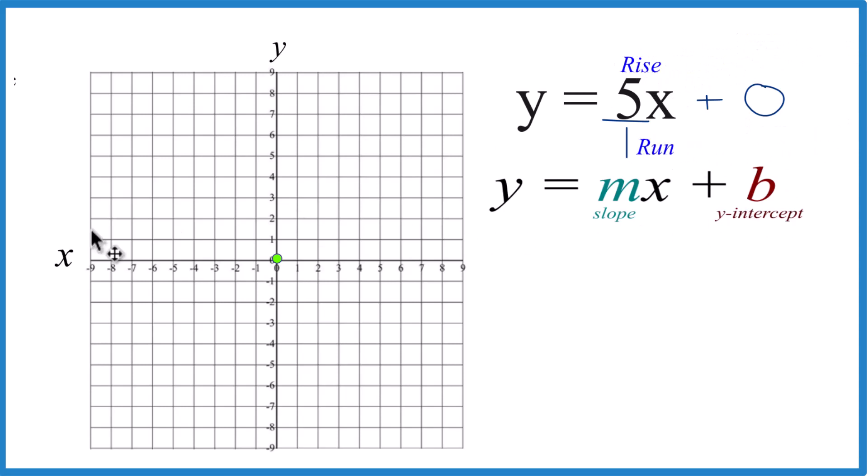So what we'll do is we'll go to our y-intercept here, we'll rise 1, 2, 3, 4, 5, and we'll go over 1. And then from there, we can do it again.